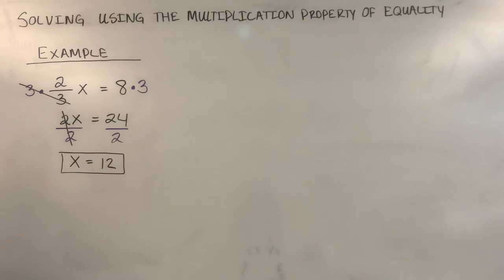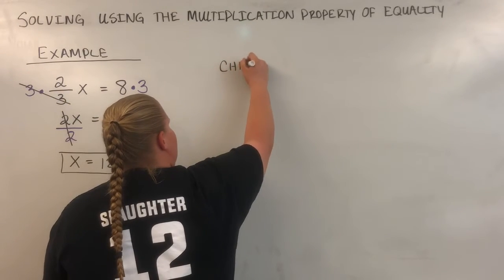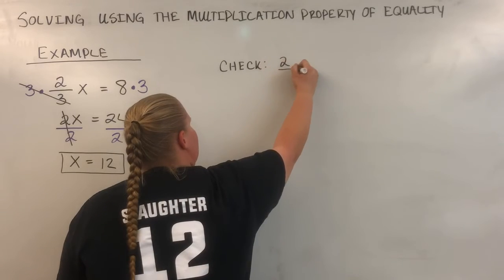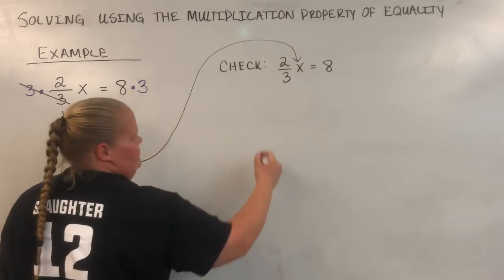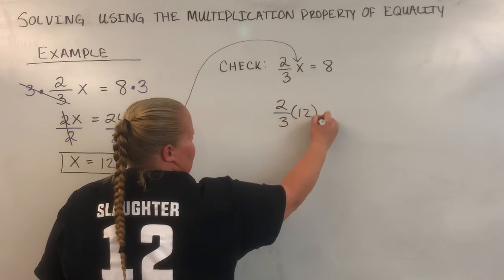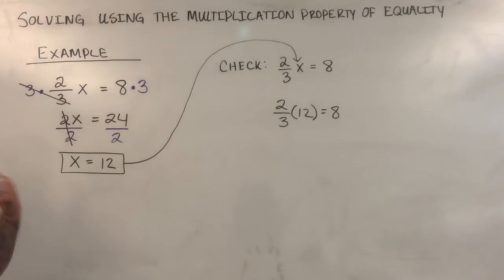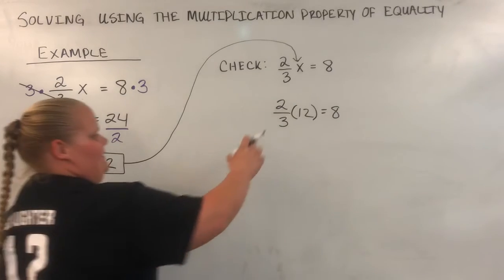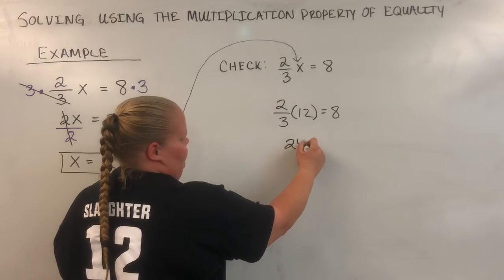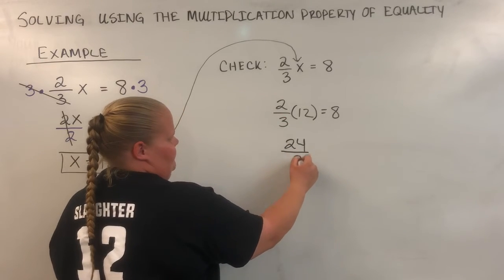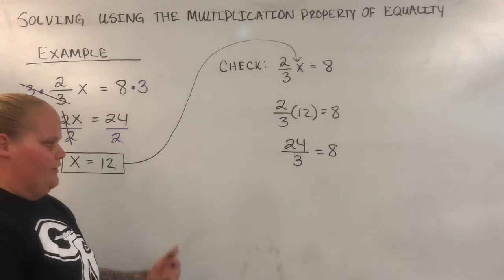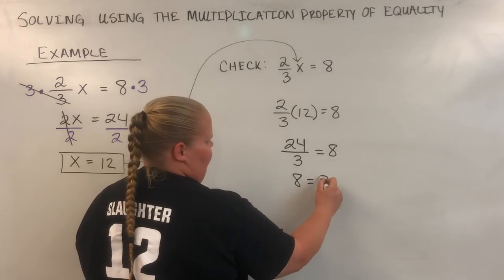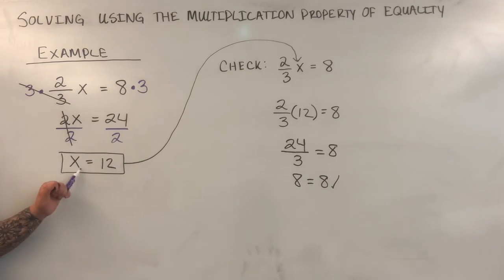We're going to go ahead and check this one. So what we're going to do is we're going to take our possible solution and we're going to plug it in for x. So I have 2 over 3 times 12 equals 8. We're going to do this one piece at a time. First, what I'm going to do is multiply 2 times 12. 2 times 12 is 24. I still have this fraction to deal with, right? So I just put it over 3. The right side didn't change, so that still equals 8. From here, 24 divided by 3 is 8, and 8 equals 8. So that works out. So 12 is a solution to this equation. 2 over 3x equals 8, 12 is the answer.